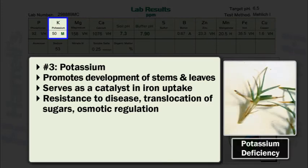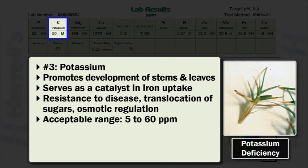Deficiency symptoms of potassium are yellow or burned areas along edges of leaves. Low potassium levels are often expressed in older leaves. The acceptable range is 5 to 60 parts per million. Generally, high potassium levels are observed in high clay or high organic matter containing soils.